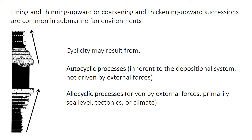These successions may result from either autocyclic processes or allocyclic processes. Autocyclic processes occur simply because of the behavior of the system itself, not because of external factors. For example, submarine fan channels and lobes migrate laterally regardless of external conditions — the same is true of meandering rivers. Allocyclic processes, on the other hand, are external driving forces nearly exclusively caused by changes in base level, sea level, tectonics, or climate.